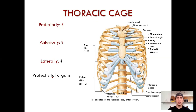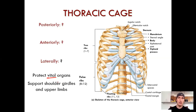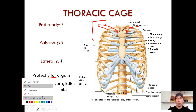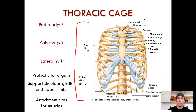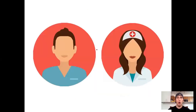The role of the thoracic cage: protect the vital organs — pause the video and answer which ones. It also supports the shoulder girdles and upper limbs — we'll take a look at that, probably in part three covering the clavicle and scapula. The thoracic cage also supplies attachment sites for muscles. This is a great overview, so you might want to pause and study it.